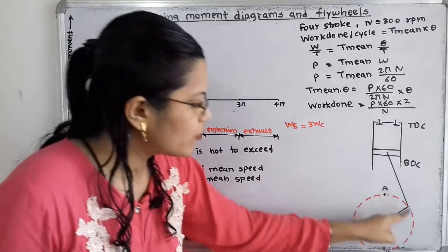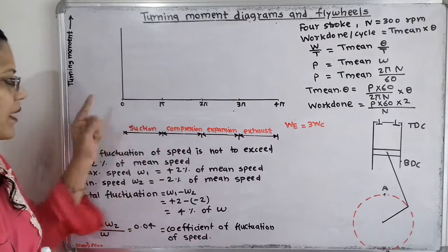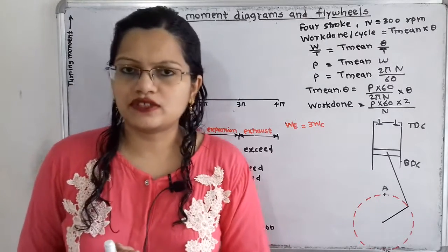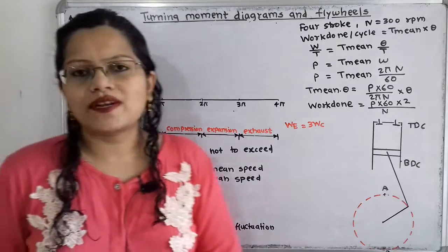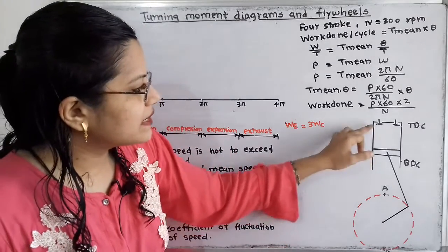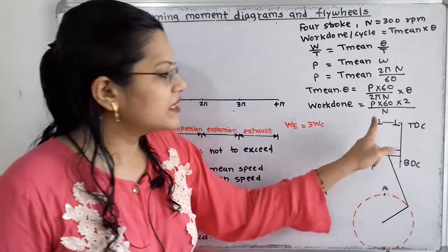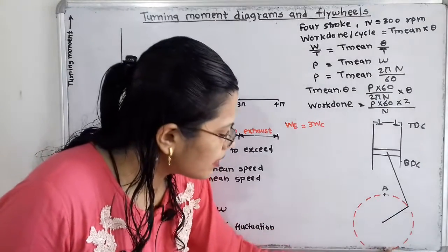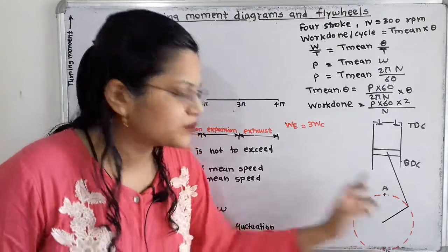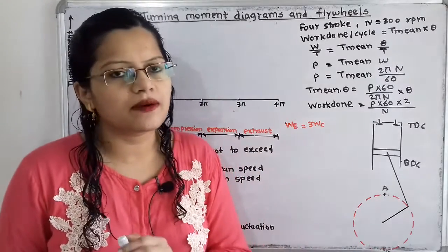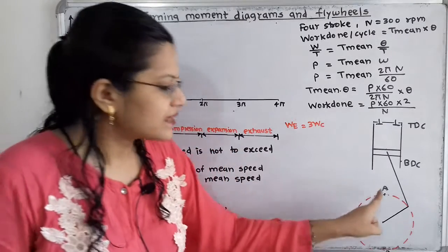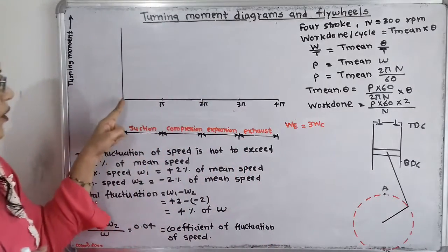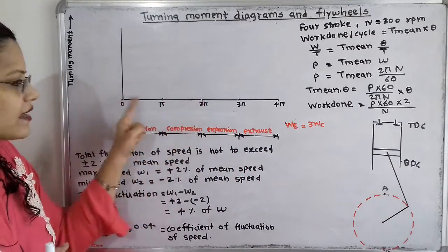During the suction stroke, half a revolution is completed and the angle covered is equal to π. So from 0 to π, we show the suction stroke. The next stroke is the compression stroke. In the compression stroke, the piston moves from BDC to TDC. Both valves remain closed and the air-fuel mixture is compressed. The crank moves from point B towards point A, completing the remaining half-revolution, so total crank movement equals one full rotation — 360 degrees or 2π radians — and we show the compression stroke up to 2π.